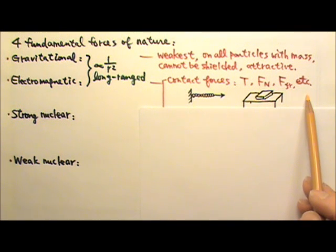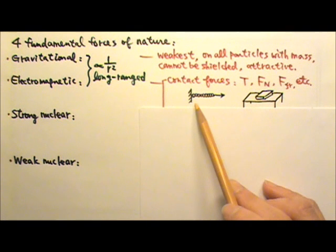are all fundamentally electromagnetic forces. For example, when we pull on a rope, the cohesive electric forces between atoms in the rope attract and pull on each other to provide tension.